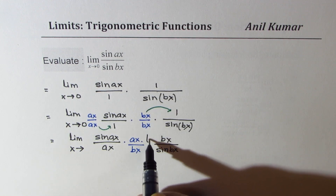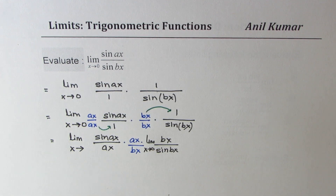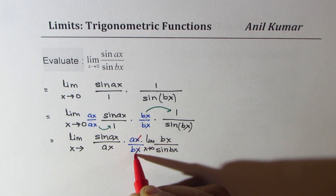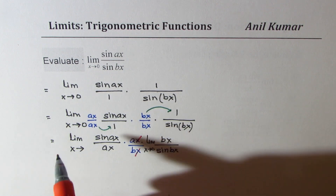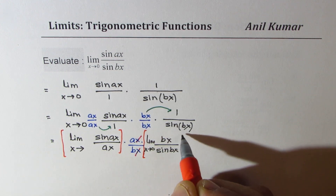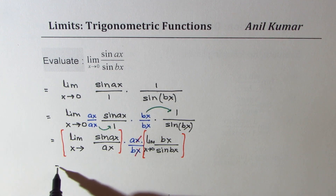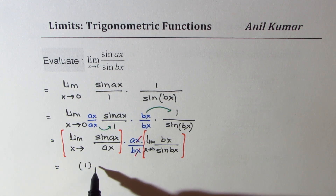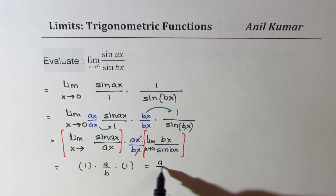We find limit x approaches 0. Here, x and x cancel. So we are left with a over b. And we also know the limit of sine ax over ax and bx over sine bx are both 1. What we are left with is 1 times a over b times 1, which is a over b.